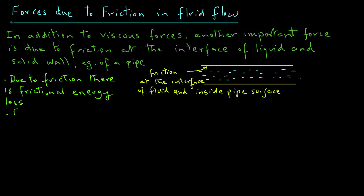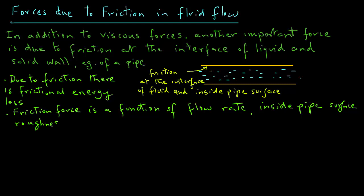Now, friction force is a function of both the flow rate as well as the inside pipe surface roughness, for example. The pipe can be very smooth, or it could be quite rough. So obviously, there will be a different amount of friction between the fluid and the pipe surface depending on its roughness.